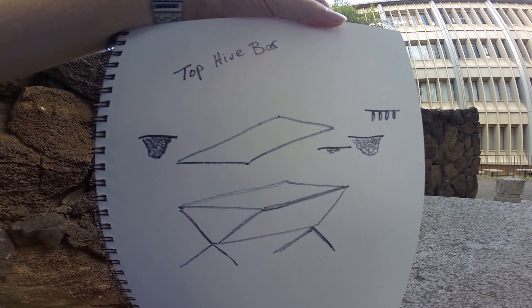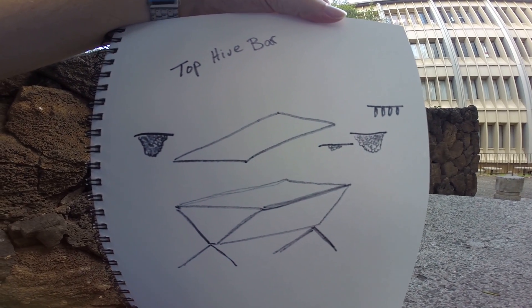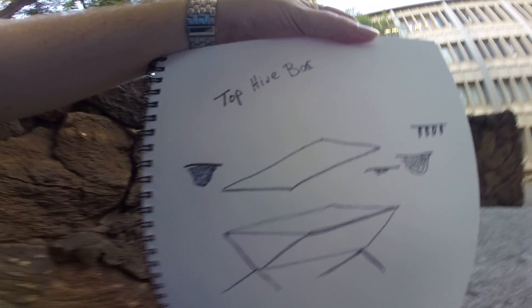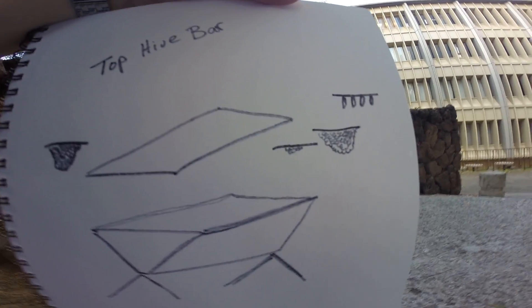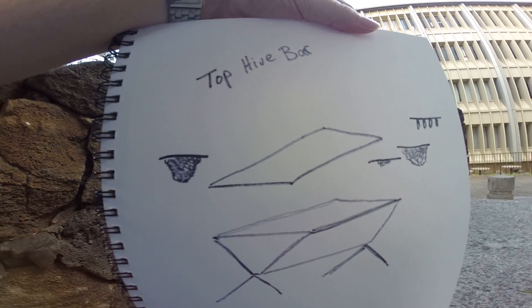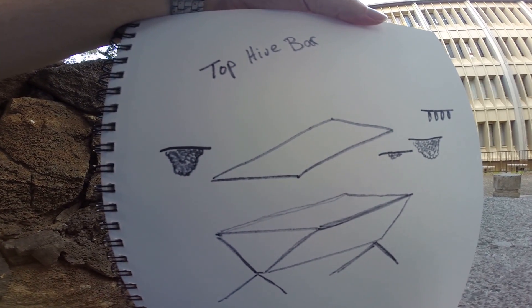The cedar may help wick away moisture better, but the design is that there are single bars in order to have the honeybees draw out wax as if they were doing it naturally.